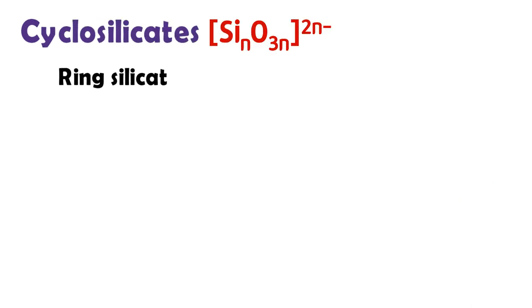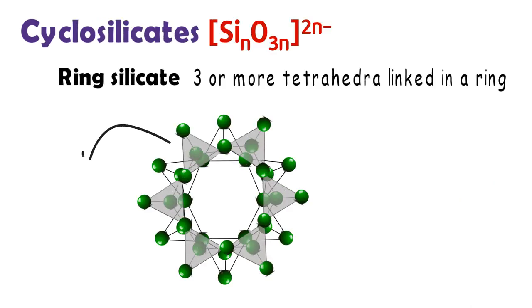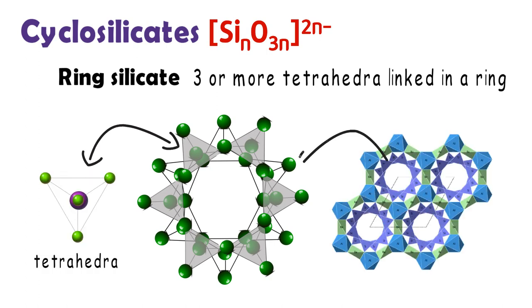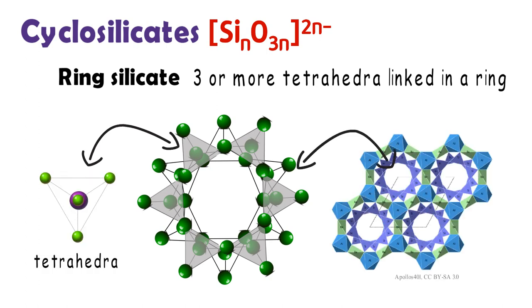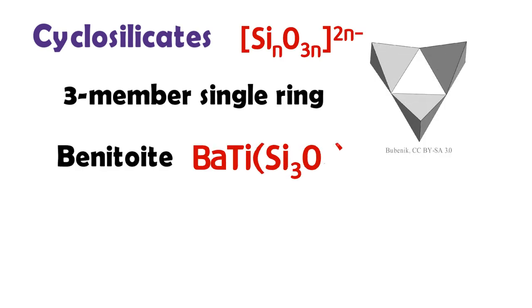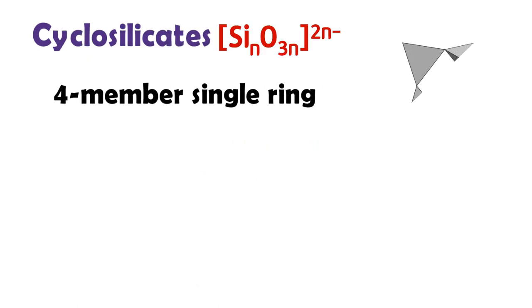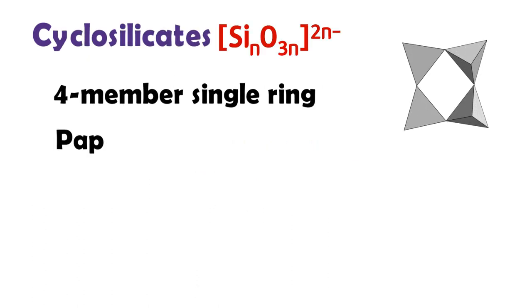As a ring silicate, cyclosilicate have three or more tetrahedra linked in a ring. There are three, four, and six-member single rings. Benitoite is a rare blue barium titanium cyclosilicate with a three-member single ring. The cyclosilicate having a four-member single ring is papagoite.